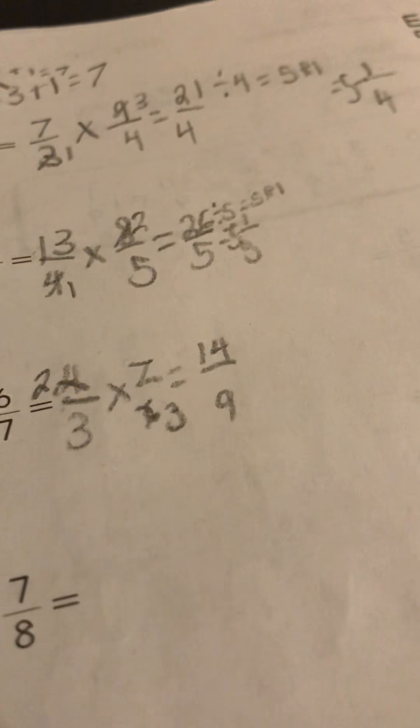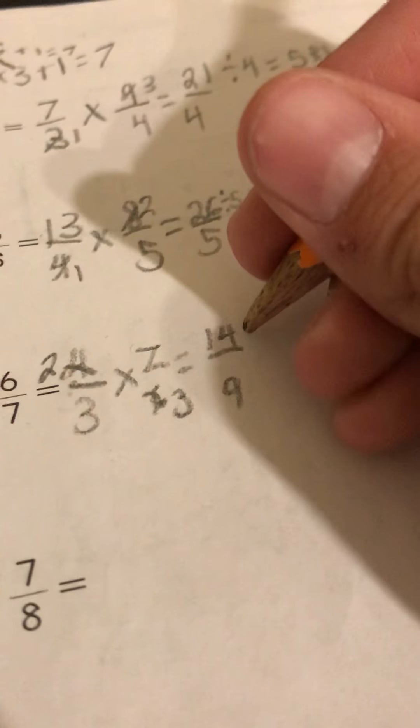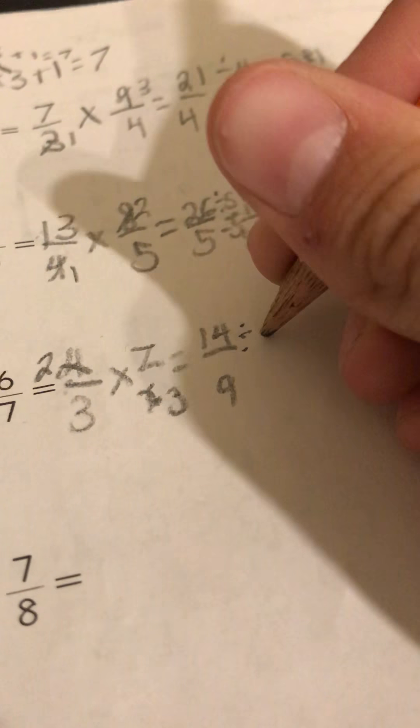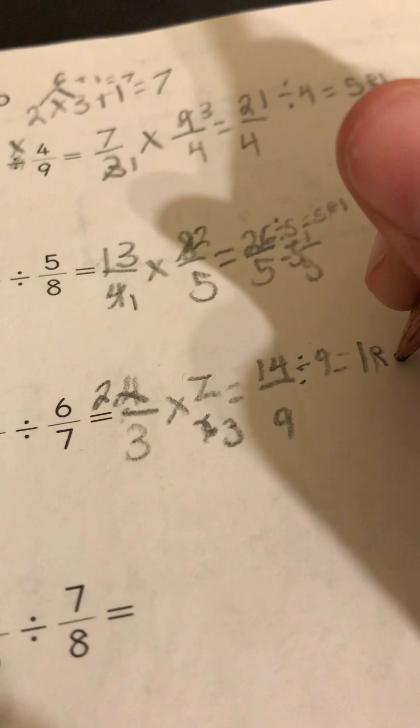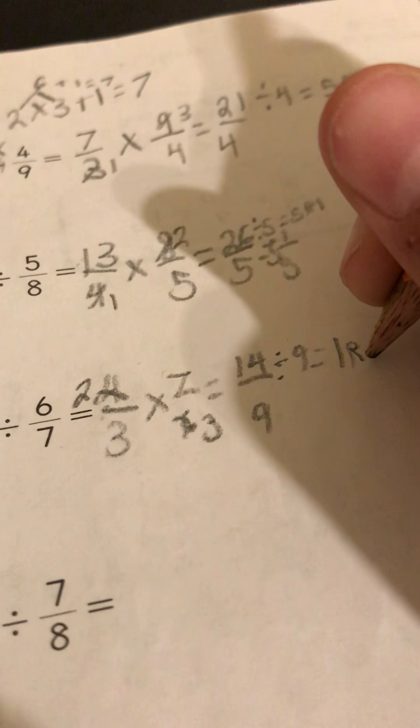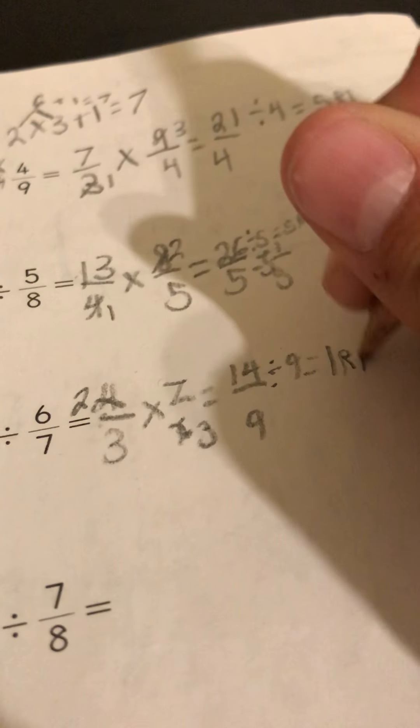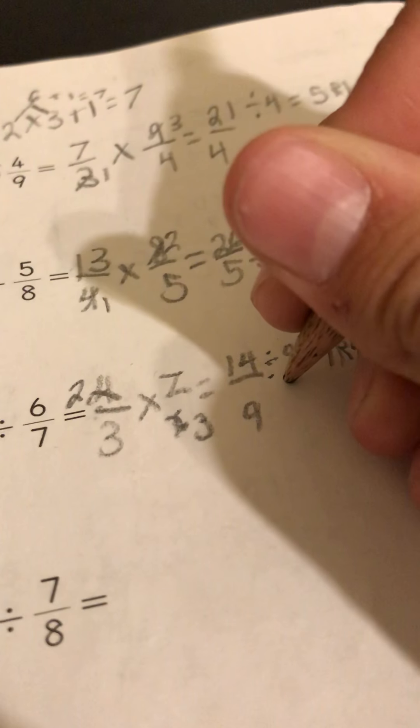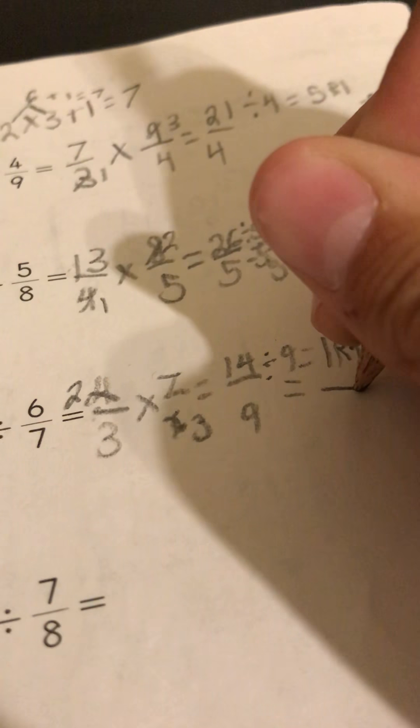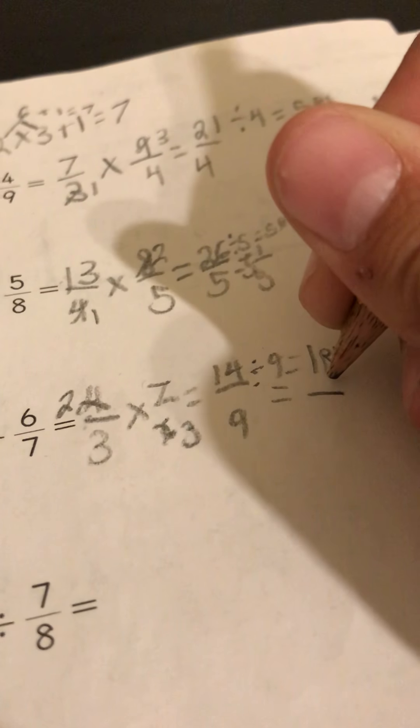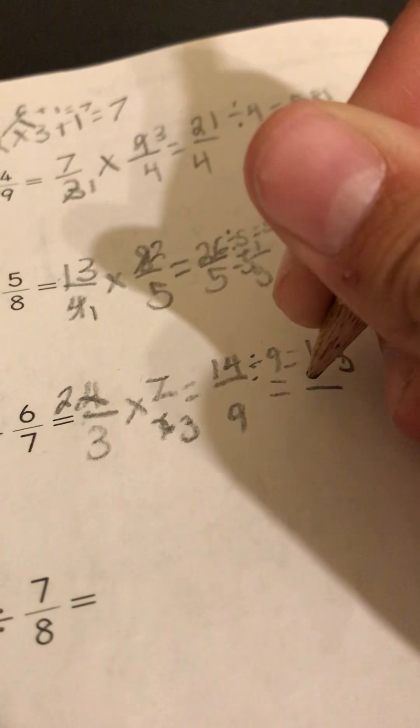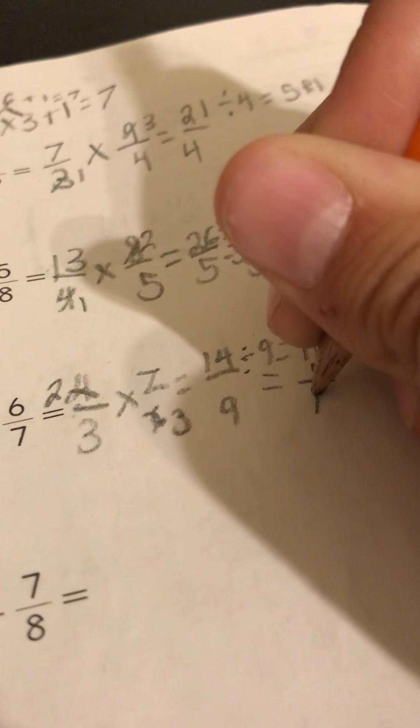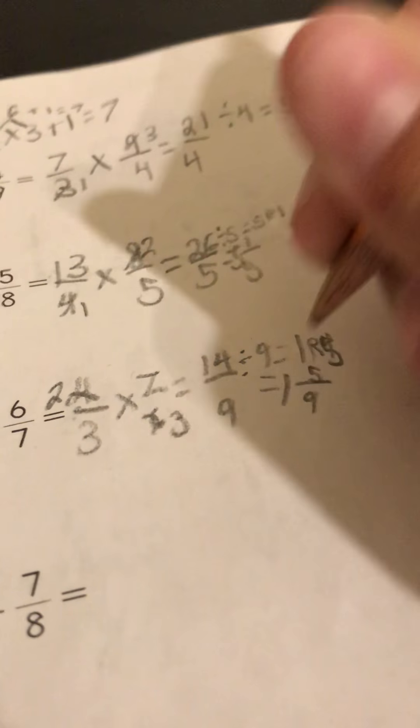So now divided by equals one with a remainder of... oh no sorry, that would be five, one with a remainder of five. So now you have five and one fifth. Wait, no, five and five ninths.